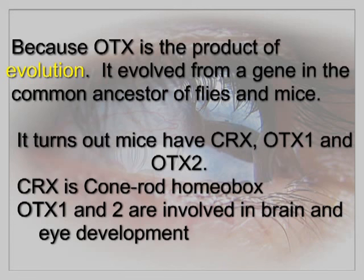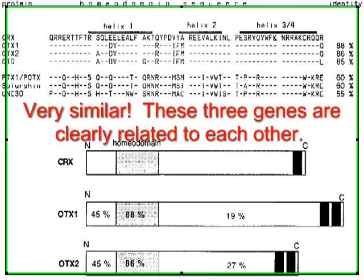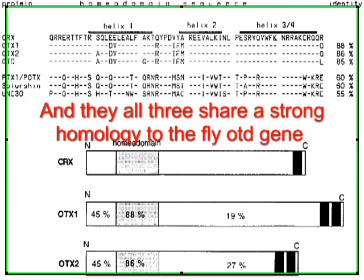It turns out mice have CRX, OTX1, and OTX2. CRX is a cone-rod homeobox. OTX1 and OTX2 are involved in brain and eye development. Can we infer any relationship between CRX, OTX1, and OTX2? Very similar — these three genes are clearly related to each other, and they all share a strong homology to the fly OTD gene.